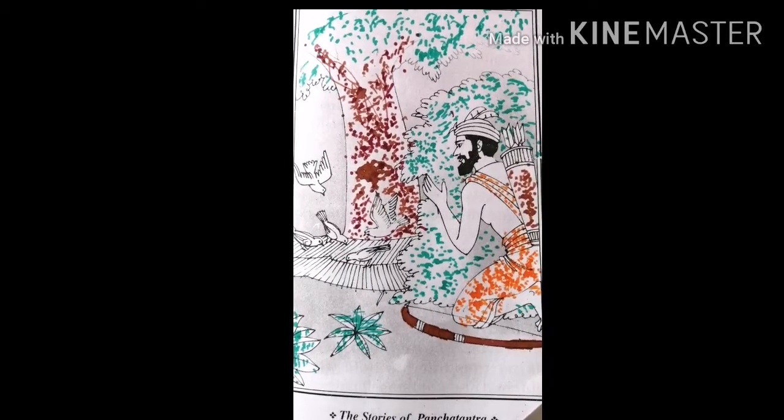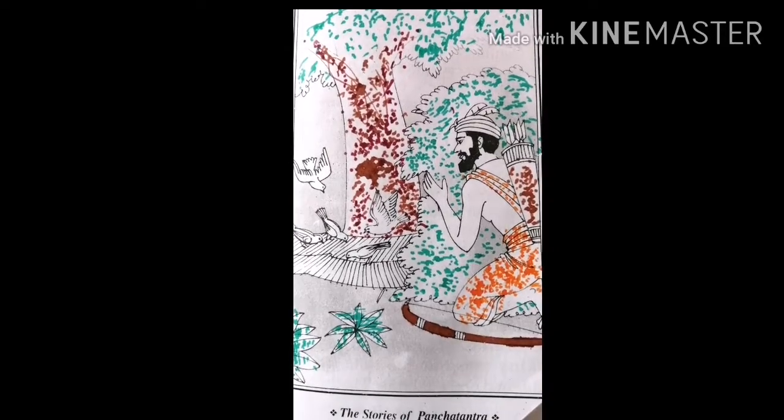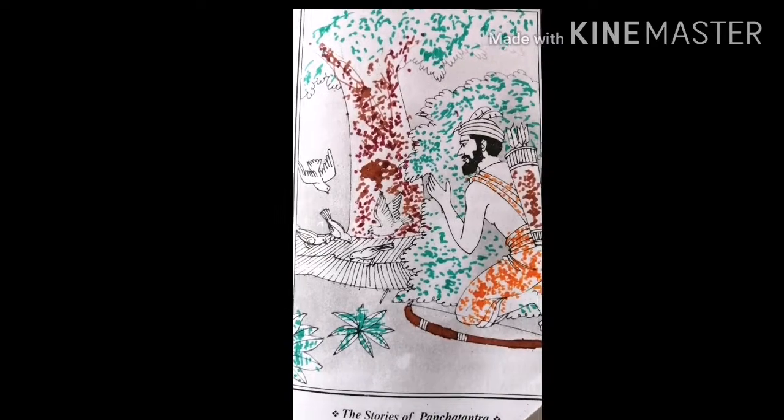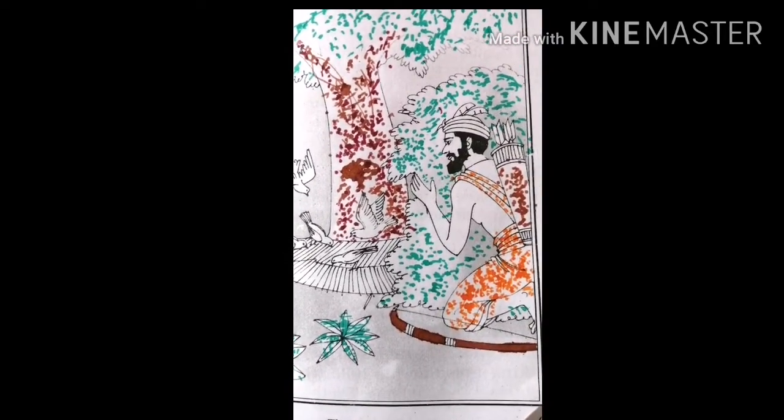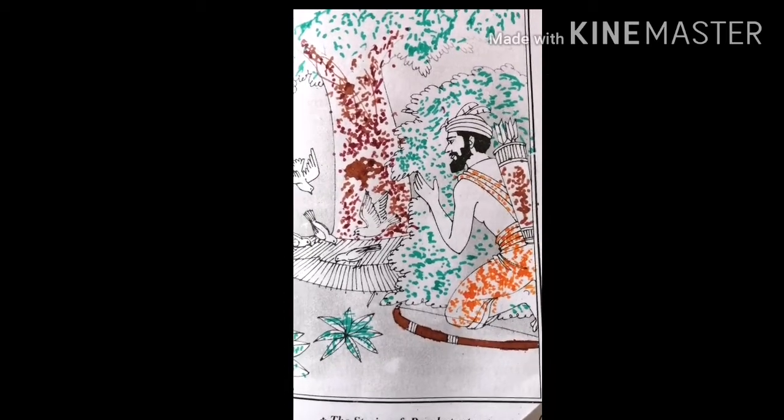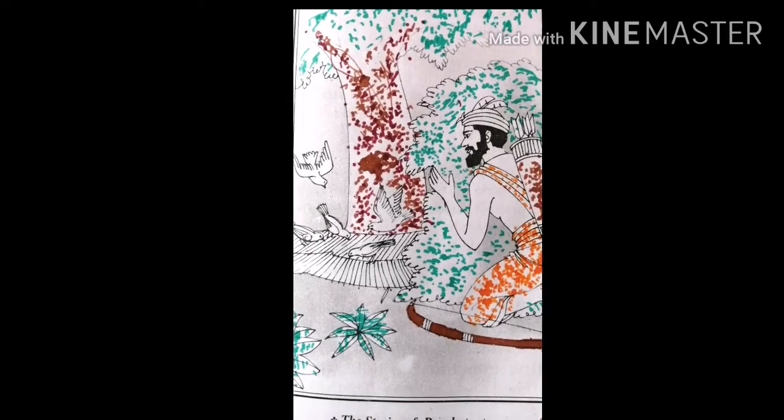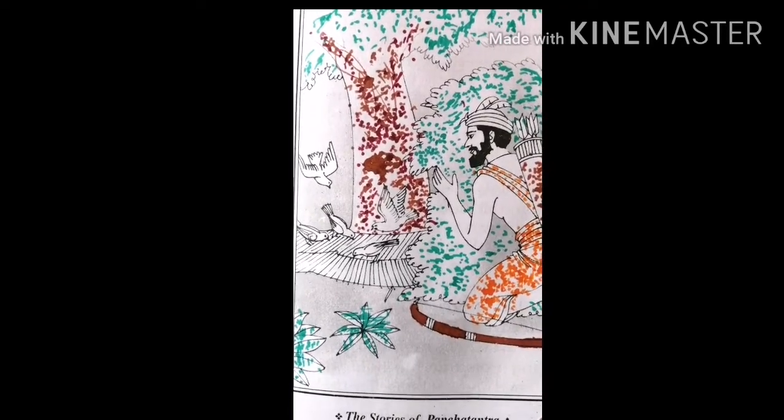He ran after the flying birds but couldn't catch them. Then all the doves flew on to meet the rat Hiranyaka living in the tree in the Vichitravan. The rat heard the doves making noise at his hole. He got frightened and hid himself in the hole.